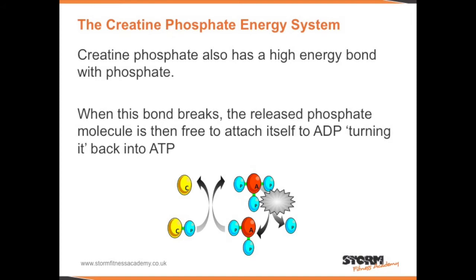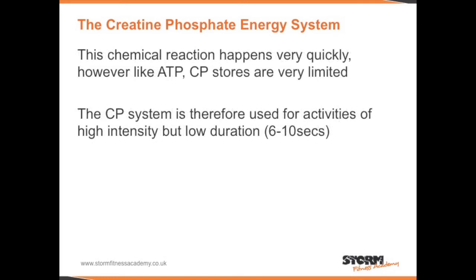Creatine phosphate also has a high energy bond with phosphate. When this bond breaks, the released phosphate molecule is then free to attach itself to ADP, turning it back into ATP. This chemical reaction happens very quickly. However, like ATP, CP stores are very limited. The CP system is therefore used for activities of high intensity but low duration.